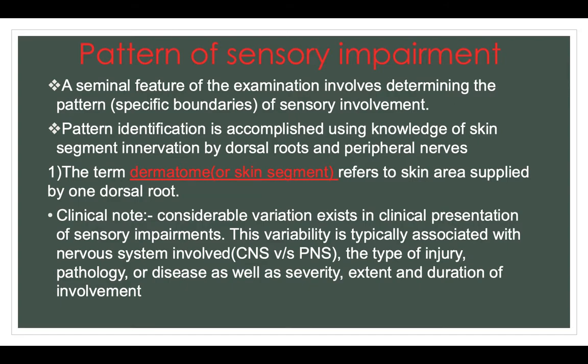Clinical note: Considerable variation exists in the clinical presentation of sensory impairments. This variability is typically associated with the nervous system involved — CNS versus PNS — the type of injury, pathology or disease, as well as the severity, extent and duration of the involvement.